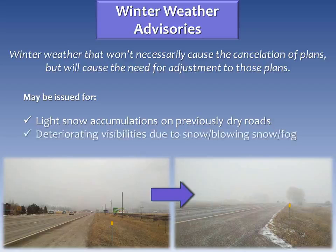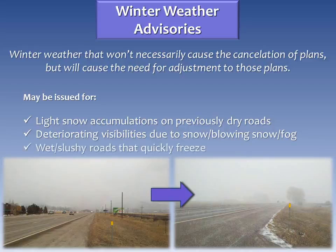Deteriorating visibilities are also considered, which can be due to snow, blowing snow, or fog. In the example pictured here, it is because of snow. Also, wet or slushy roadways that quickly freeze — let's say overnight after the temperatures drop below freezing — if the roads have changed for the worse from the night before, that warrants an advisory.